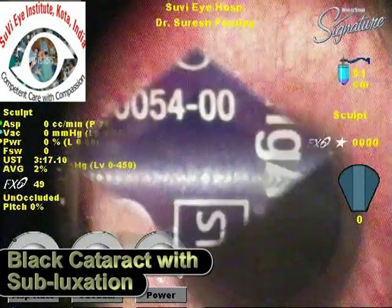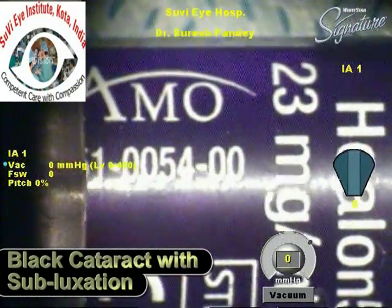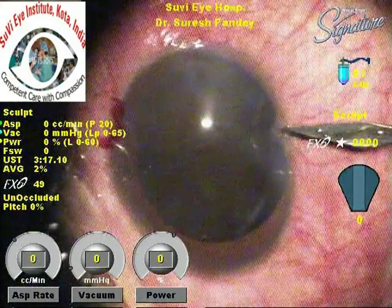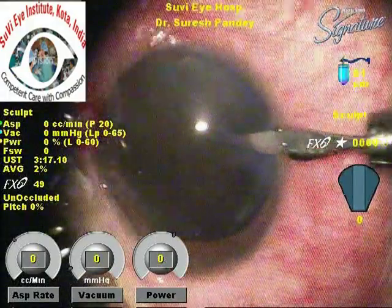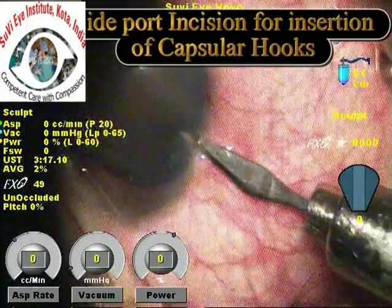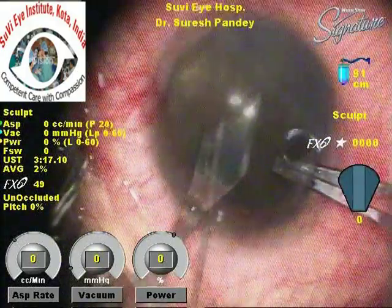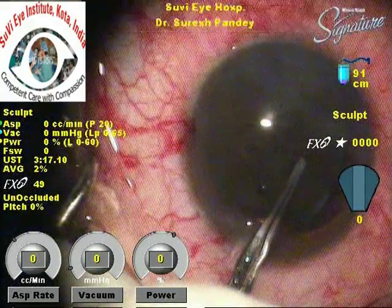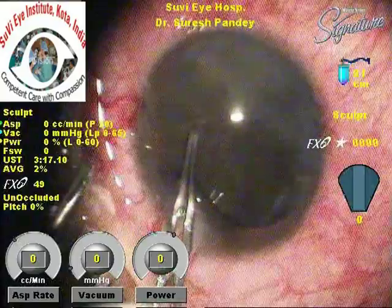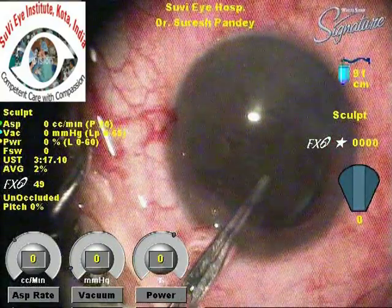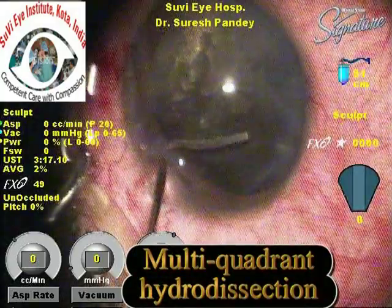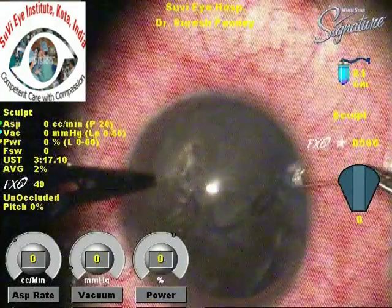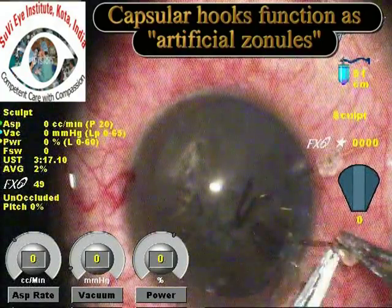In this second case there is a black cataract with subluxation. The first step is to inject ophthalmic viscoelastic to plug the vitreous and prevent prolapse into the anterior chamber. Side port incisions are made to place the capsular hooks. The capsulorrhexis is initiated away from the area of the dehiscence and performed gently, as counter-traction on the capsule is quite low in these cases.